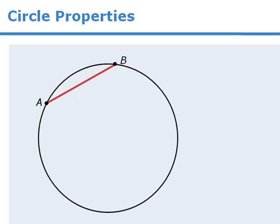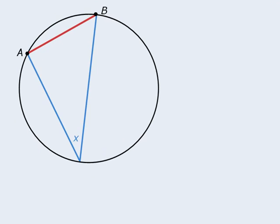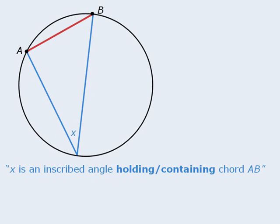As you have already seen, the red line segment here is called a chord. Now, if we have an angle such that its vertex lies on the circle, we call that angle an inscribed angle. So here we will say that angle X is an inscribed angle. To be more precise, we can say that angle X is an inscribed angle holding or containing chord AB.